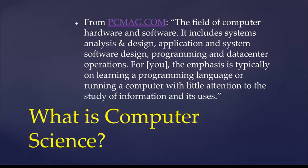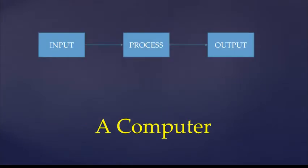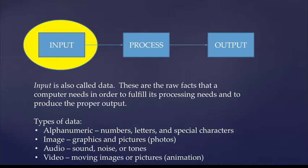So what is computer science? In a computer, we have input data, processing, and output. Input is also called data. These are the raw facts that a computer needs in order to fulfill its processing needs and to produce the proper output.